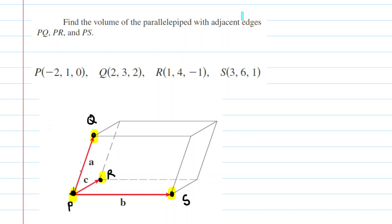And what we've done is we've created three vectors. You can look carefully here, and we have a vector drawn from point P to point Q, and we're just going to call that vector A. We've drawn another vector from point P to point R, we're going to call that vector C. And then we've drawn a third vector from point P to point S, and we're going to call that vector B.